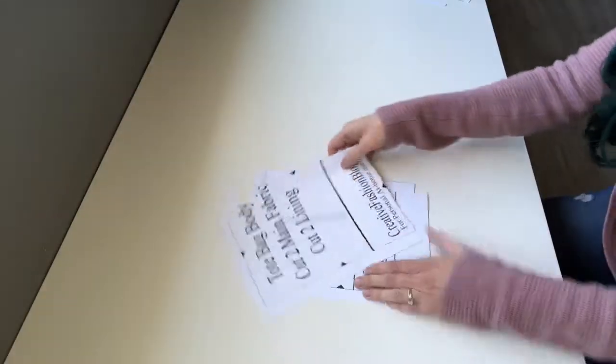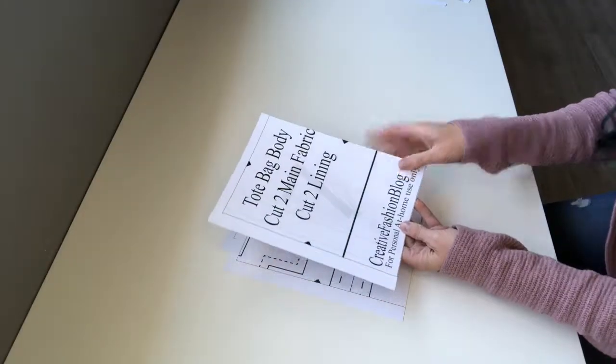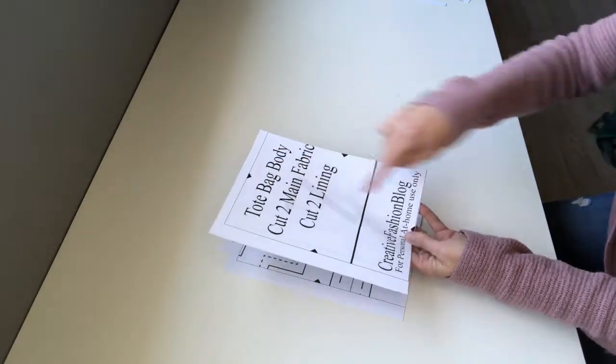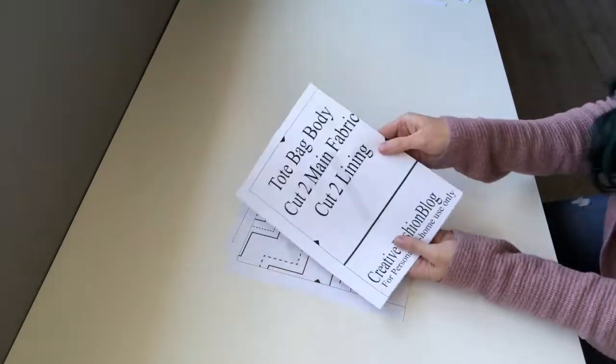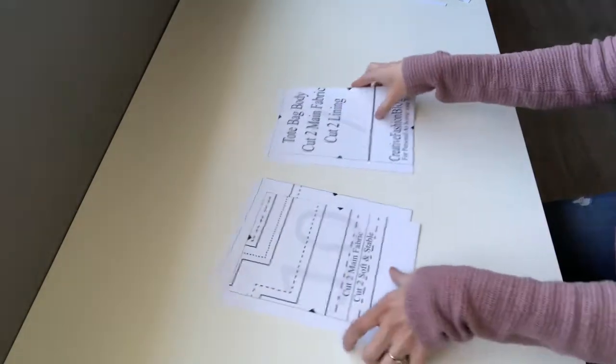Now it's time to tape it all together. Each sewing pattern is going to have little notches around the border. If you line those up and tape them together, your pattern is going to quickly take shape.